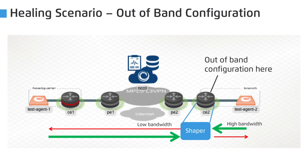Now, the first failure scenario. Imagine that an engineer changed the configuration on CE2 at the branch office, and this immediately negatively affects the delivered service quality.